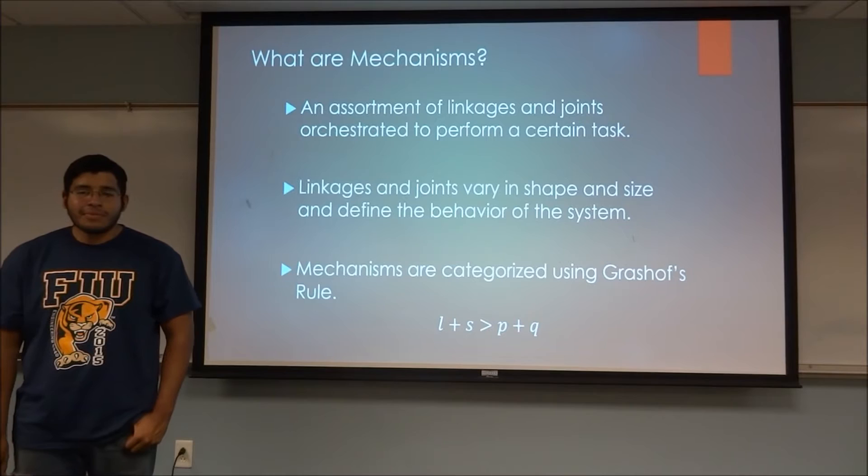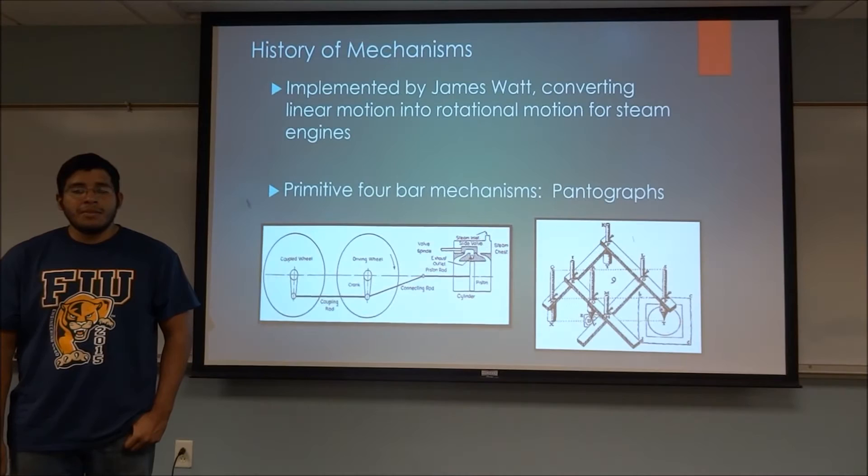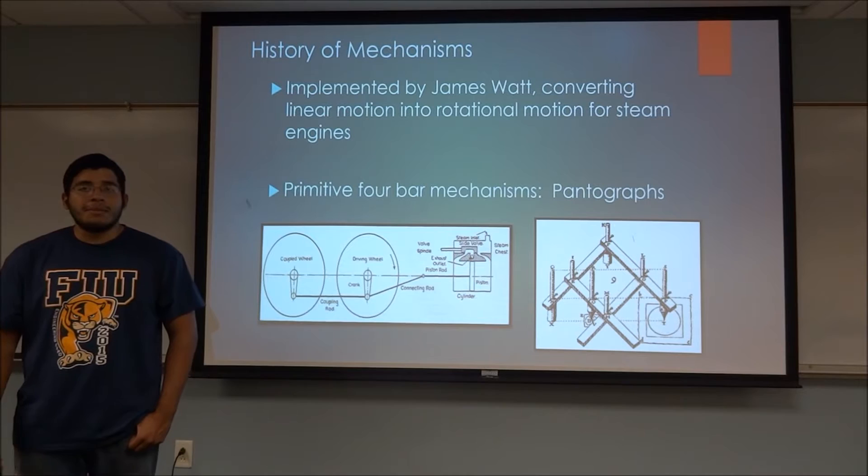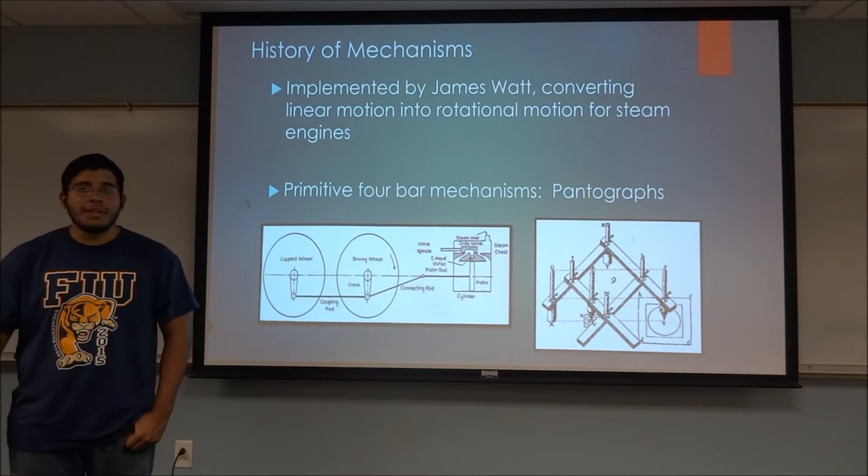These concepts of mechanisms date back to Greek times and gained popularity during the 1500s. One of the first implementations was by James Watt to convert linear motion from steam engines to rotational motion. An example of a primitive four bar mechanism is a pantograph, which allows us to draw a small picture onto a larger plane.